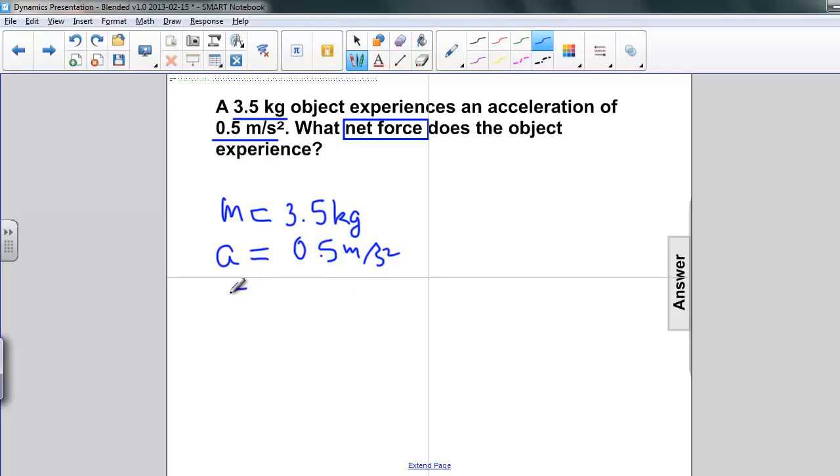And we're asked to find the net force. So we simply write Newton's second law. The net force is equal to mass times acceleration. And then substitute the quantities in there.